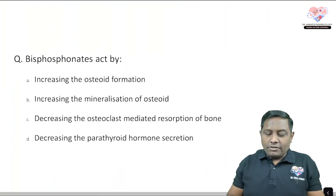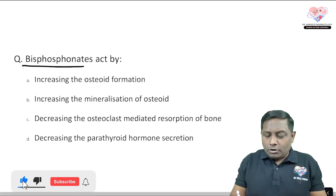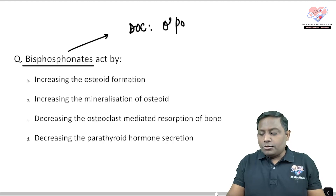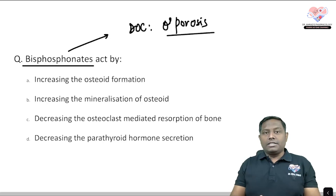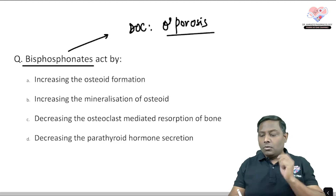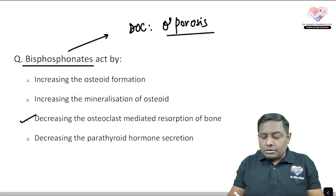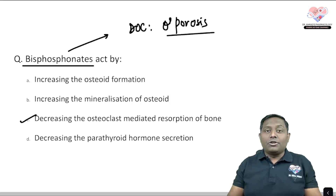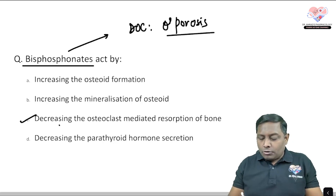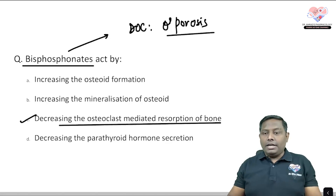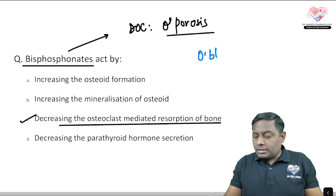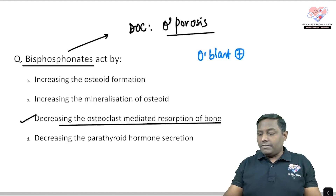The first question is: bisphosphonates act by? Bisphosphonates are the drug of choice for osteoporosis in any age group and any gender. They do not increase osteoid formation. Their main action is to decrease osteoclast-mediated bone resorption. They get absorbed by the osteoclast and promote its apoptosis. In simple terms, they decrease osteoclast activity.